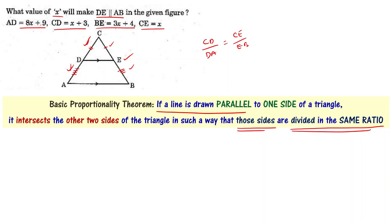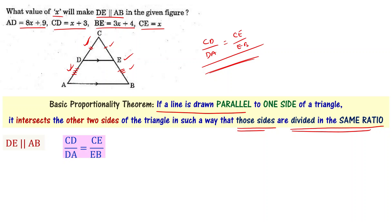Line DE, being parallel to AB, divides the two sides of the triangle in the same ratio: CD/DA = CE/EB. Substituting the given values: CD = x+3, DA = 8x+9, CE = x, EB = 3x+4. So we get (x+3)/(8x+9) = x/(3x+4). Now we apply cross multiplication.